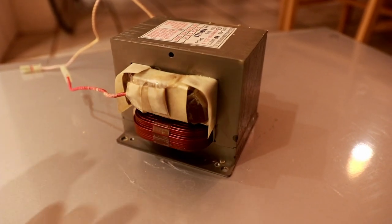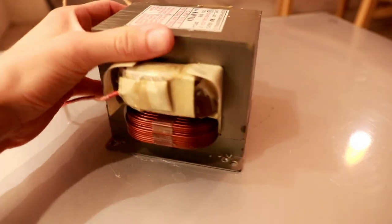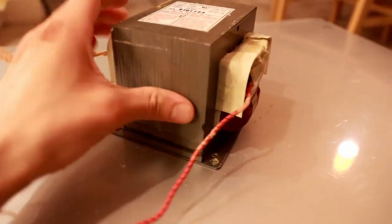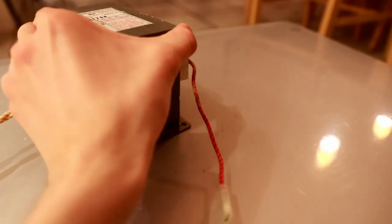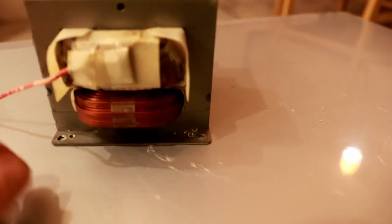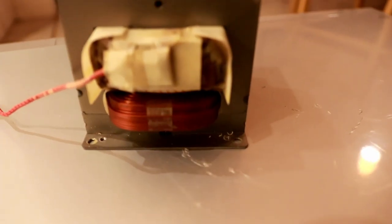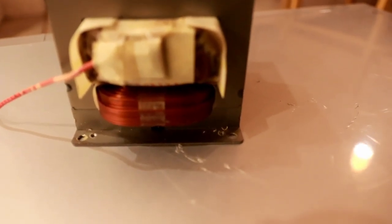So here is the transformer removed from the microwave. As you can see it's quite large, in fact it's probably about 25% of the weight of the entire microwave unit. The other thing that's really notable about it is the primary winding which is connected to the 120 volt supply is really quite heavy-duty wire.